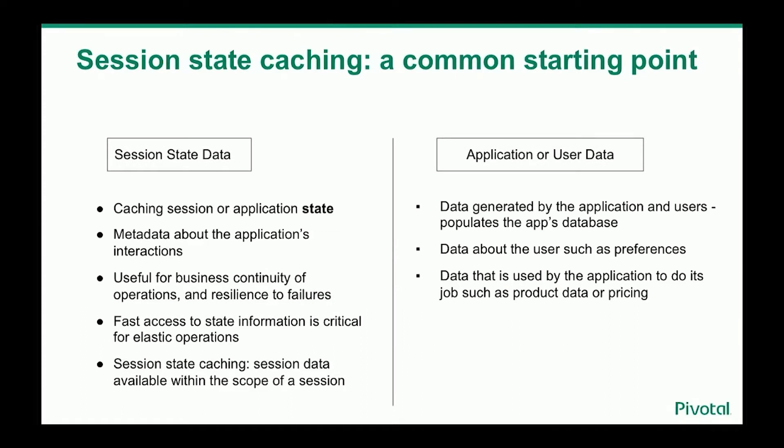First, let's make a distinction between session state data and application or user data. Application or user data is the data we interact with when using an application — this is what we're most familiar with. It's our user data for the particular app. The application populates a database with all the user data and its own application-specific data and user preferences. That type of user data is also application data, usually a schema constructed specifically for the application.